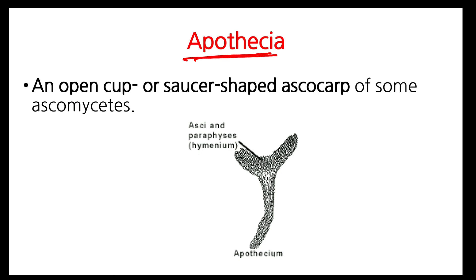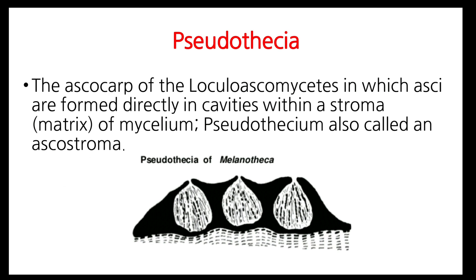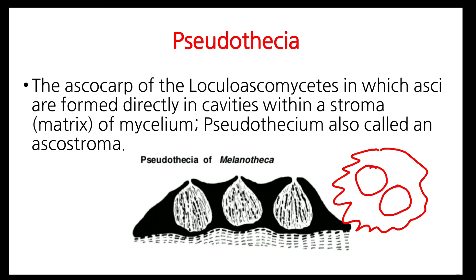Apothecia is an open, cup- and saucer-shaped fruiting body. It is cup-shaped and has a hymenium layer. In the hymenium layer, asci and paraphyses are present alternately. Each ascus contains 8 ascospores. Pseudothecia is present in loculoascomycetes, where asci (bitunicate) are formed inside locules, and inside the asci are ascospores. Pseudothecia is also called ascostroma — it has no proper shape, being simply an aggregation of mycelium with locules formed inside, and ascospores produced within those locules. This is present in apple scab fungus Venturia inaequalis.